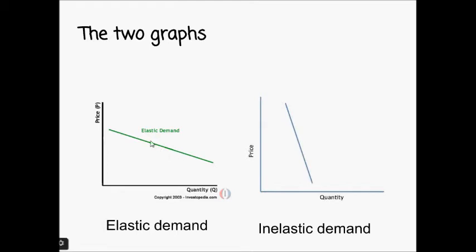So basically what they refer to: if there is a slight change in price there is going to be a huge change in quantity — this is usually referred to with luxury products. However with the inelastic diagram on the right, if there is a small change in price the quantity is not going to change much. So if water goes drastically cheap you are not going to buy much more of it, but if it goes drastically high you are still going to buy roughly the same amount.